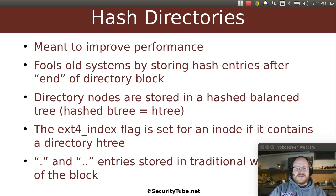We start an entry with a zero and it says, 'I must be at the end.' Then we have our directory nodes in a hashed balanced tree, sometimes called an H-tree — that's just shorthand for hashed B-tree. The X-for-index flag has to be set if your inode contains a directory H-tree. Now, if you have hashes stored for your directory, you will still have the traditional dot and dot-dot entries stored without the hashes. So these are not part of that whole system, and this is meant to speed things up.